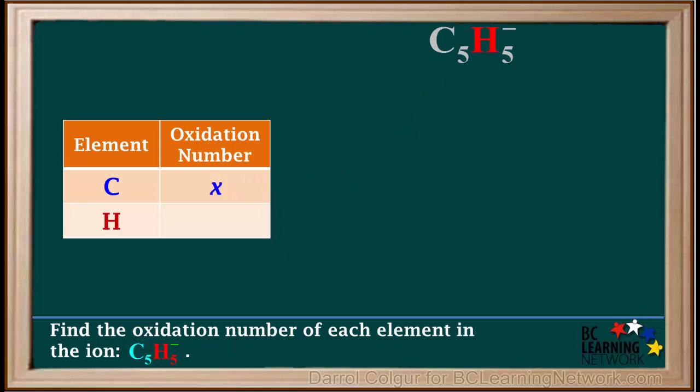Hydrogen's symbol is written to the right of the symbol for carbon, but carbon is not a metal, so this is not a metallic hydride. Therefore, the oxidation number of hydrogen is a normal positive one.